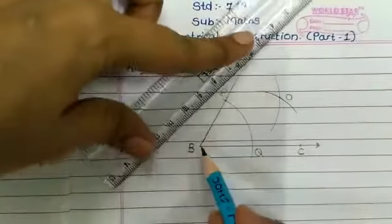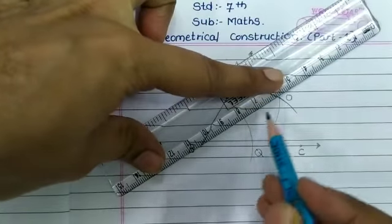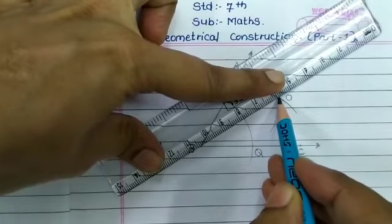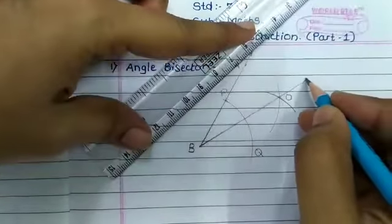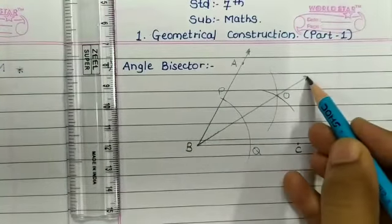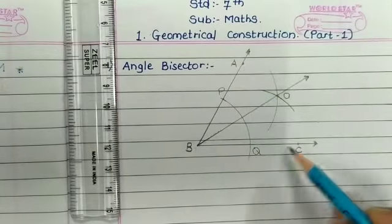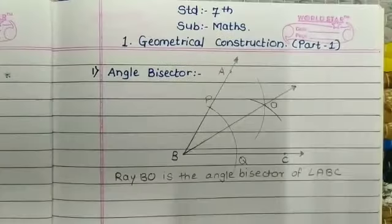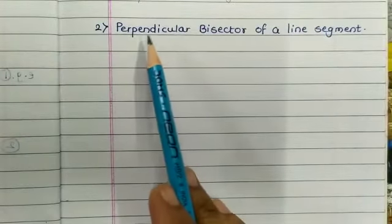Here ray BO is the angle bisector of angle ABC. This is the angle bisector.